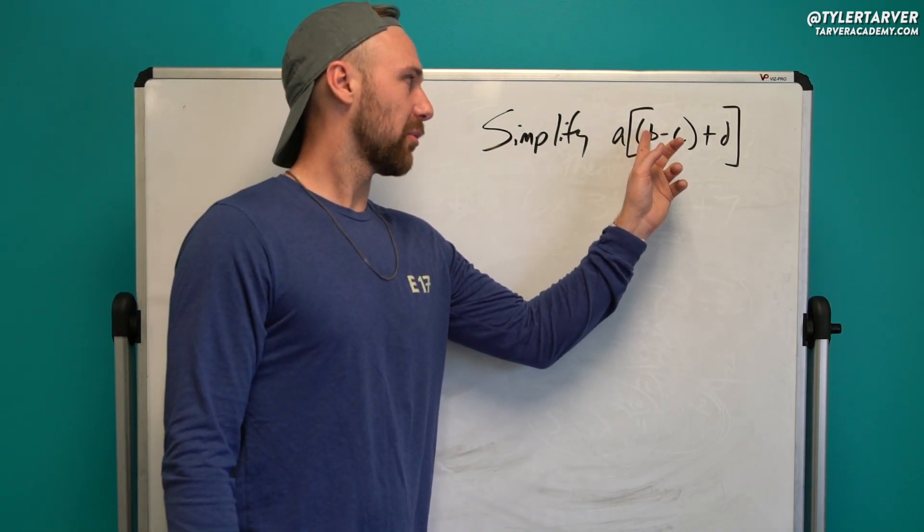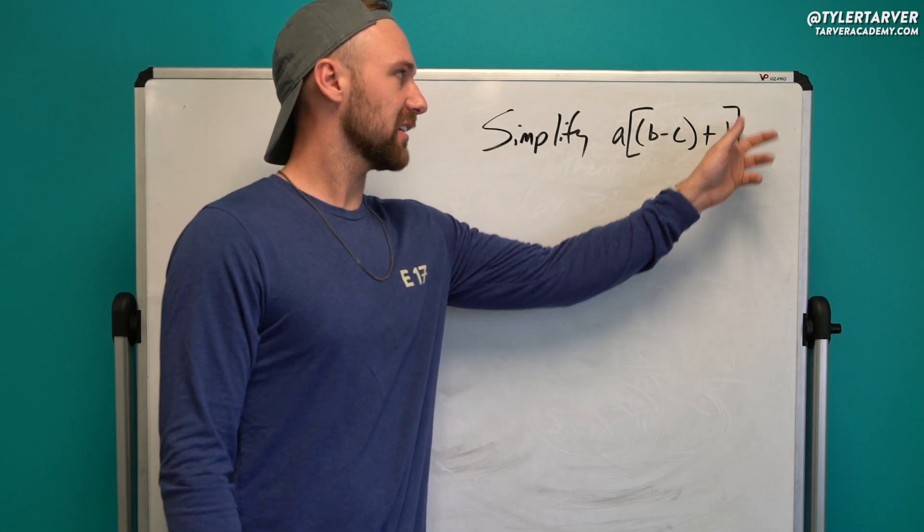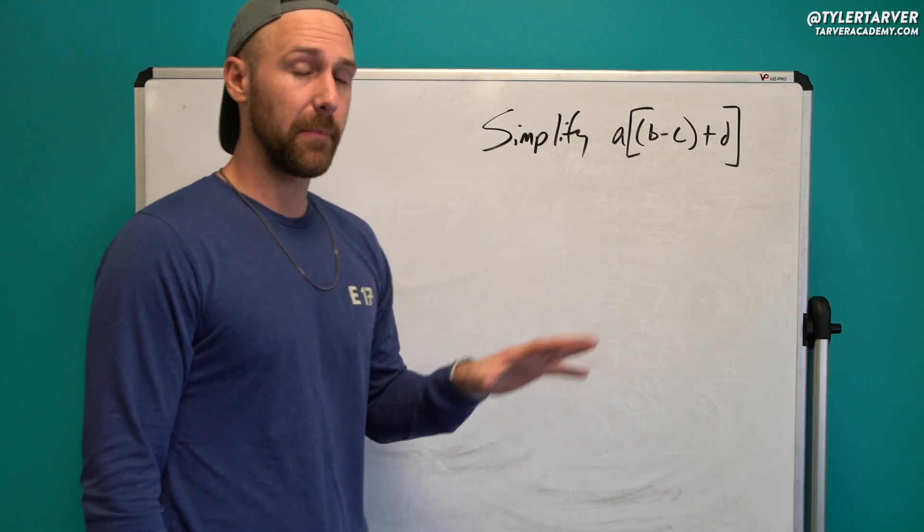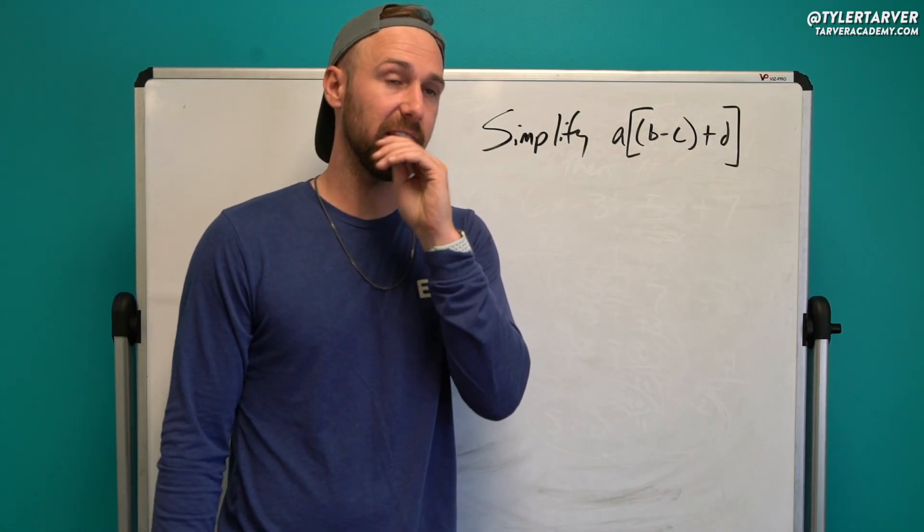Simplify A bracket parentheses B minus C parentheses plus D bracket. Say, pause this, give it a shot, and I'll see if you got it right. Ready? Go.